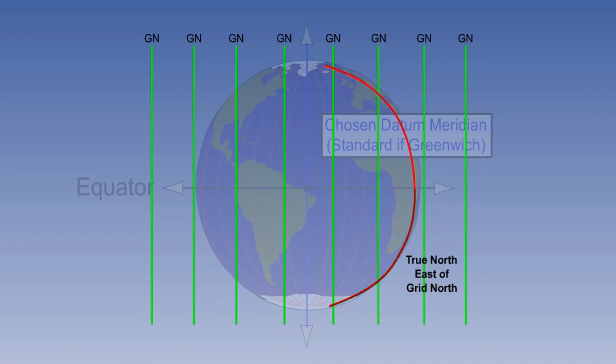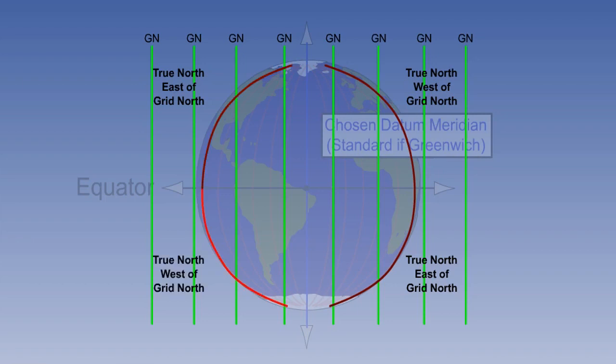Let's now consider the same meridian in the northern hemisphere. You can see that here, the red line, which is true north, is always anticlockwise, or west, of the green grid north direction. We'll now look at a meridian west of the datum. Up here in the northern hemisphere, the meridian is always clockwise, or east, of the grid line. And finally, in the southern hemisphere, west of the datum, the meridian is always inclined west of grid north.